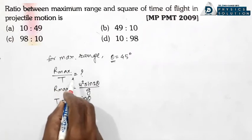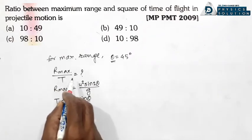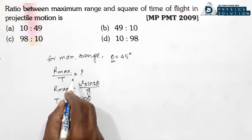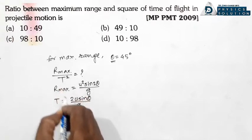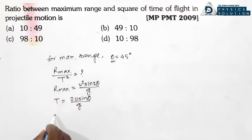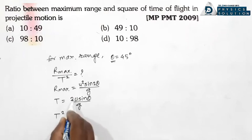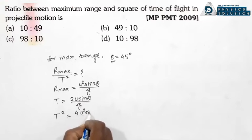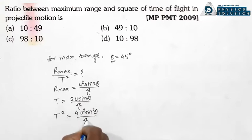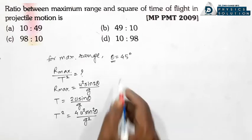Ratio of maximum range and square of time of flight. Matlab yahan par t square hoga. T² is equal to 4u² sin²θ divided by g².